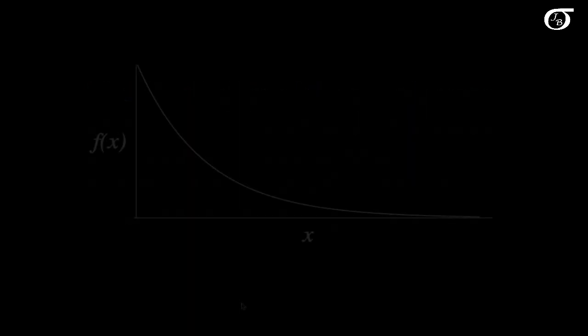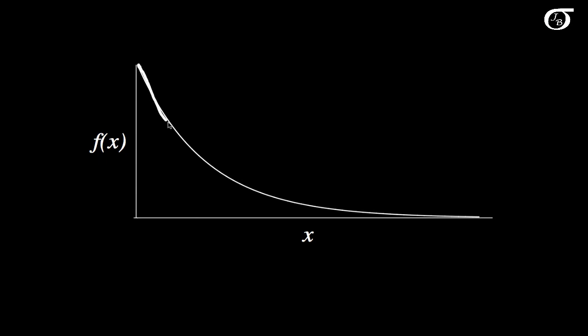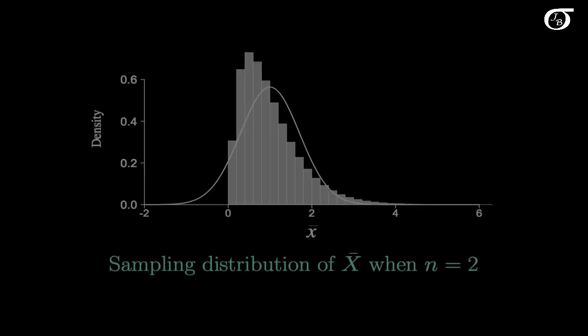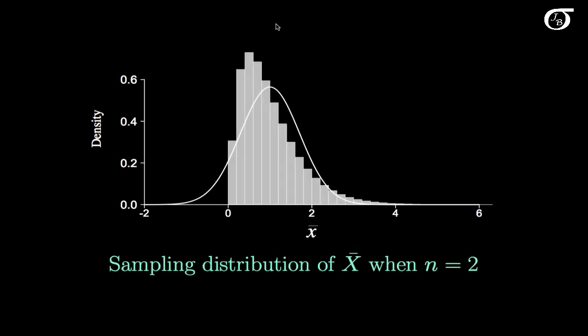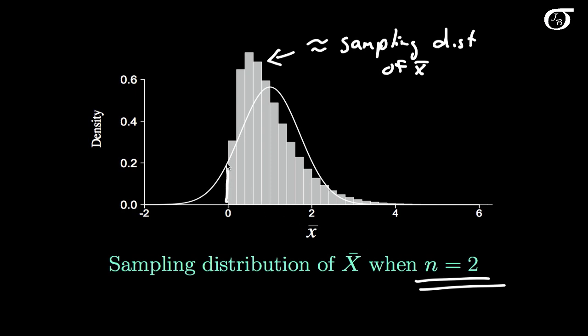Let's look at a couple of illustrations. Here we have an exponential distribution — the PDF is fairly high on the left and trails off to the right, something distinctly not normal. Suppose we draw a random sample of size 2 from this distribution, calculate the mean, and repeat this many times. If I carried this out a few million times and plotted it in a histogram, it would look something like this — this is approximately the sampling distribution of X-bar when the sample size is 2. Note this histogram isn't really all that normal; it retains some skewness from the original distribution. I've superimposed a normal curve for perspective, and our distribution of the sample mean when n is only 2 is not that close to normal.